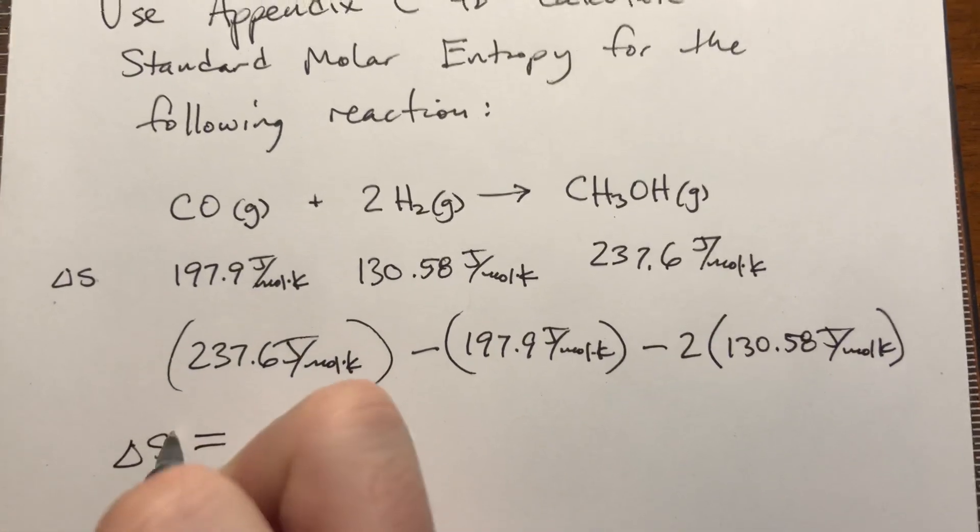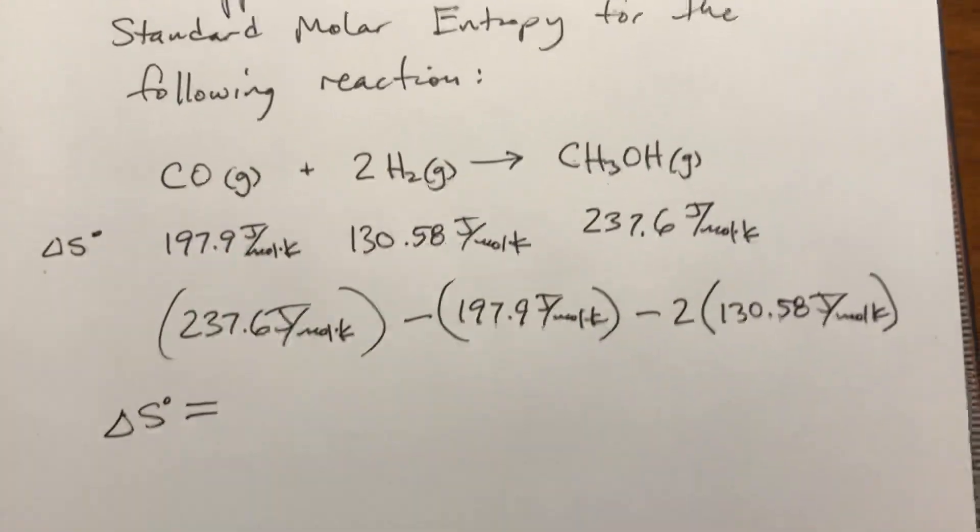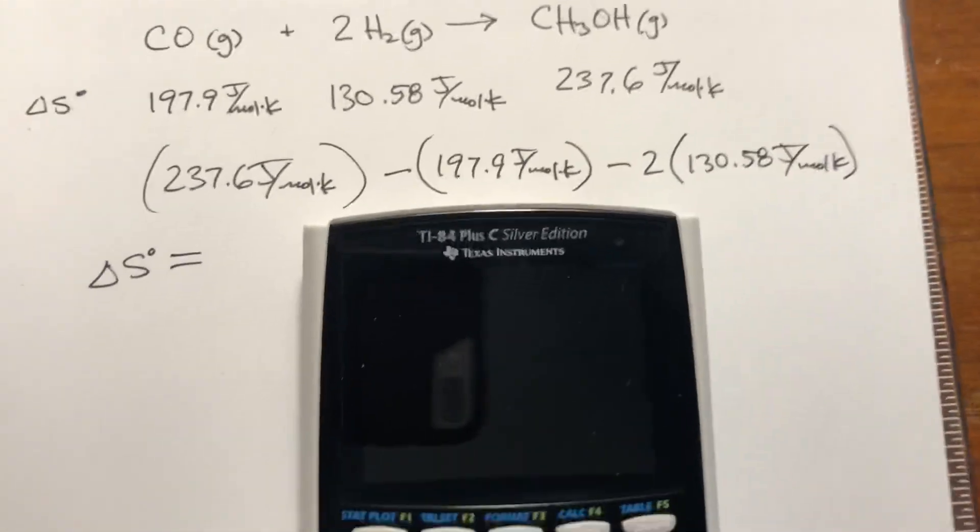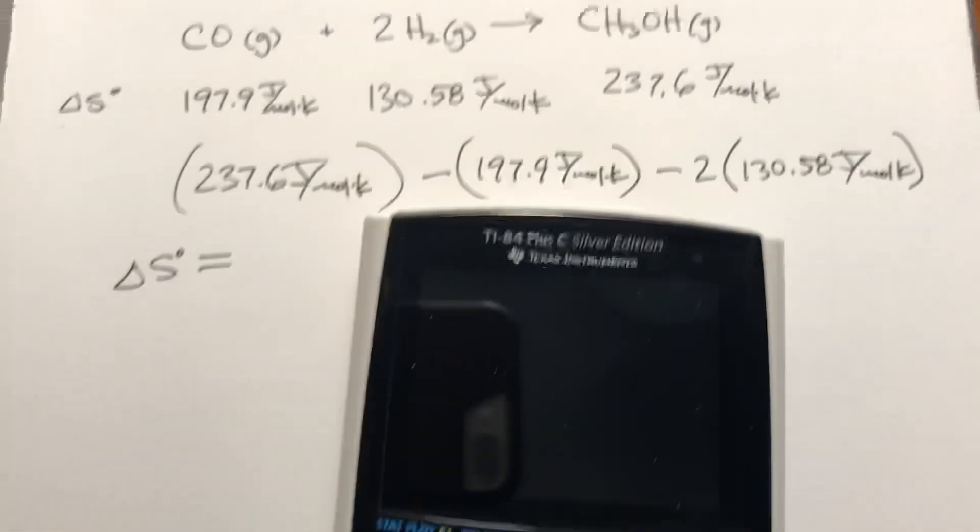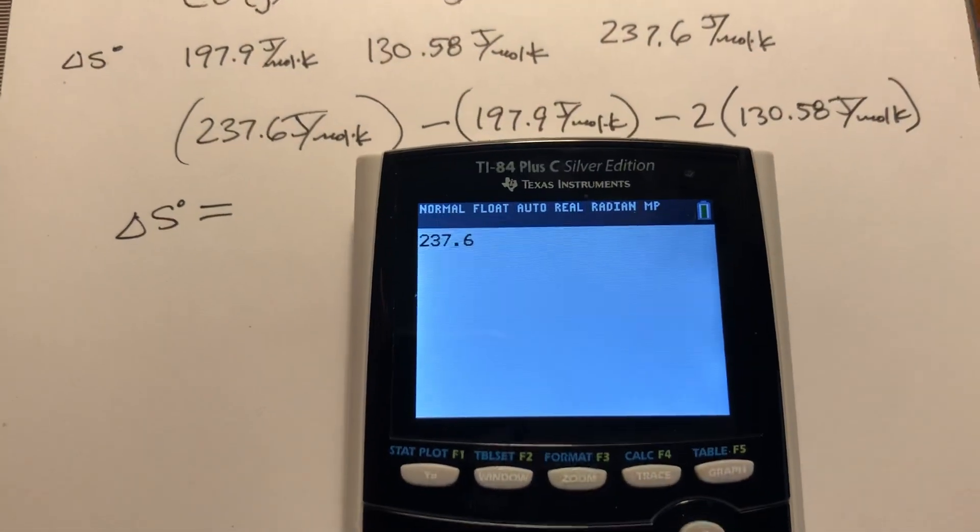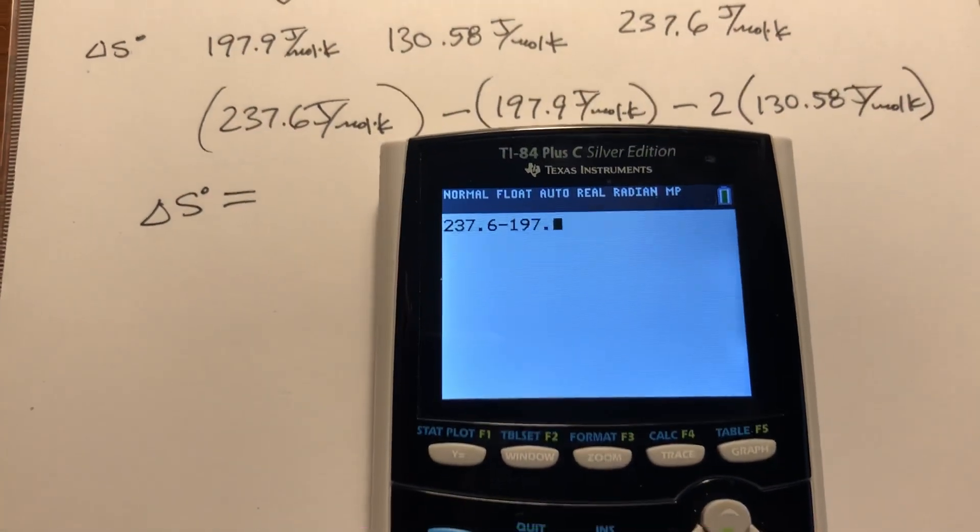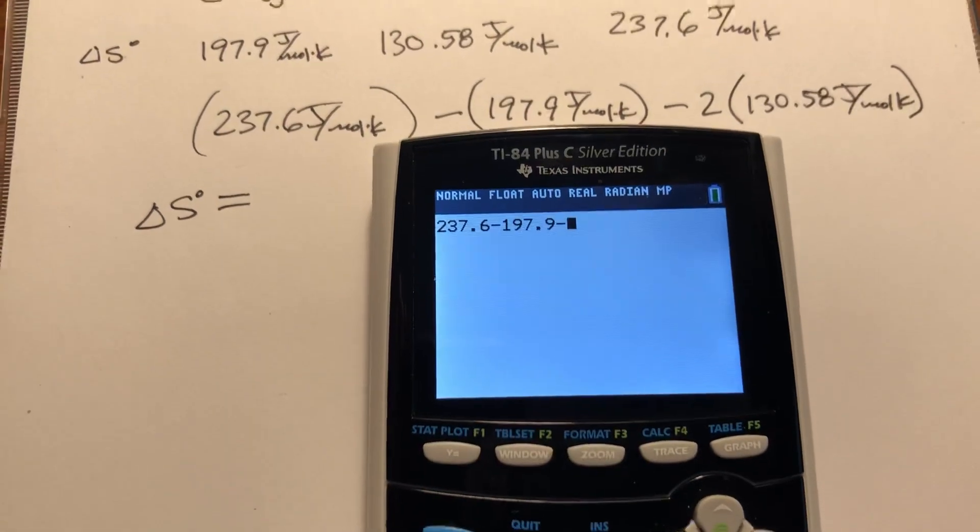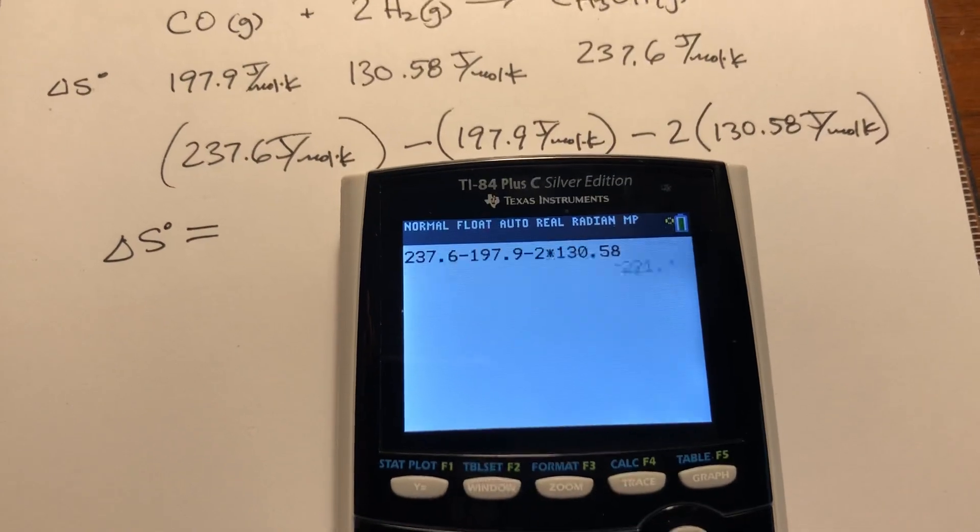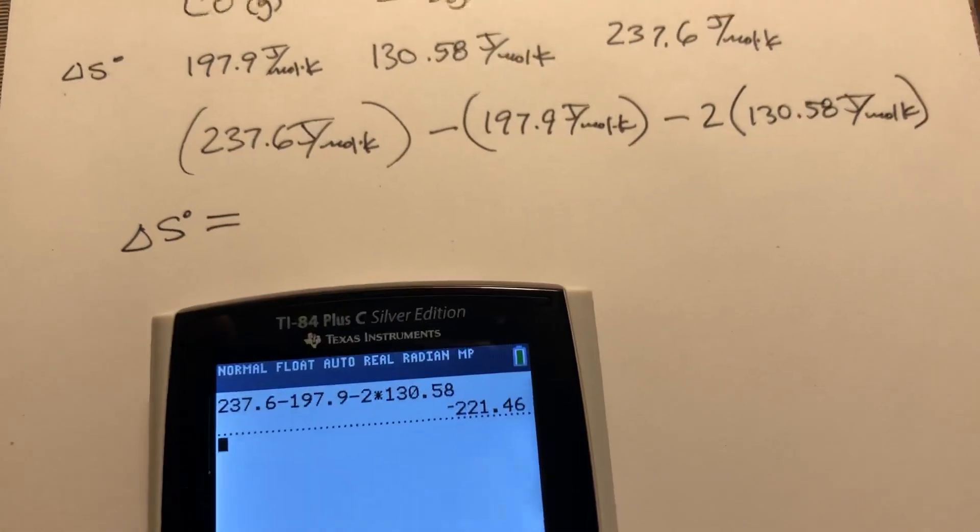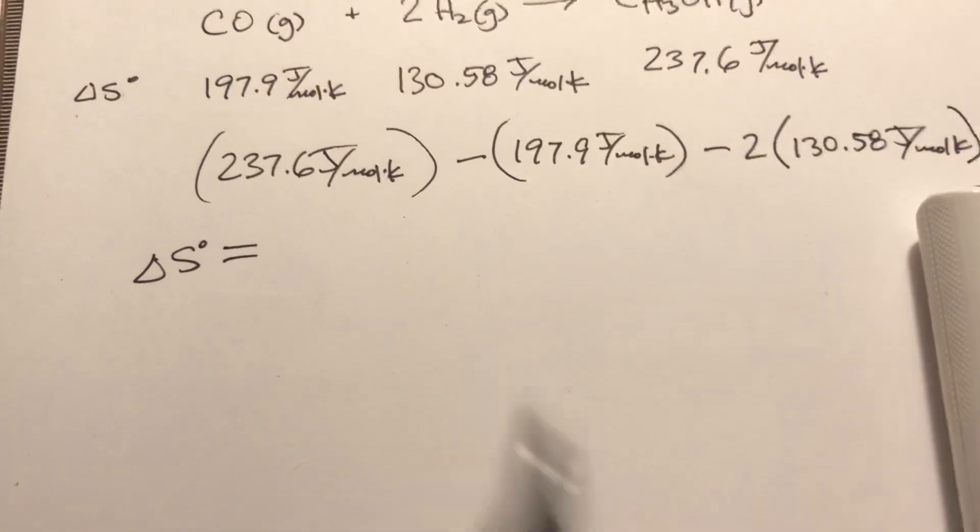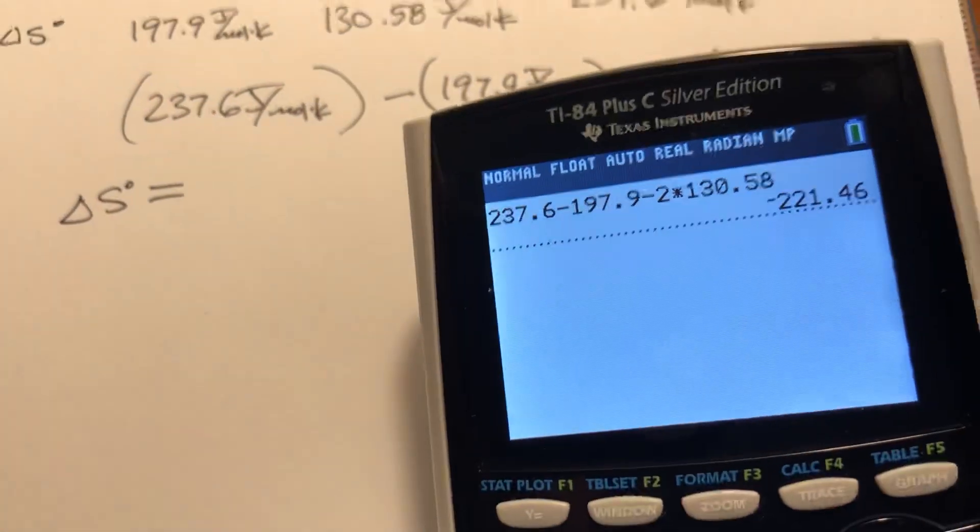So ΔS, the change in entropy for this reaction, is 237.6 minus 197.9 minus 2 times 130.58. Our value comes out to negative 221.46. For significant figures, these all have one decimal place, so -221.5 joules per mole Kelvin.